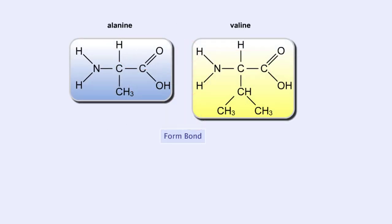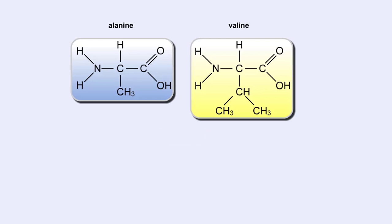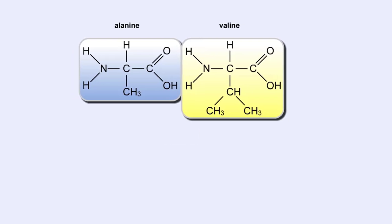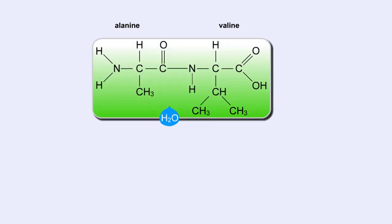Now let's look at how amino acids bind to each other and make proteins. The bond between two amino acids is called a peptide bond. When a peptide bond forms, a molecule of water is produced. Watch this peptide bond form between alanine and valine. The carbon atom in the carboxyl group of alanine reacts with the nitrogen atom in the amino group of valine. At the same time, the alanine loses an OH group and the valine loses a hydrogen atom, forming the water molecule.